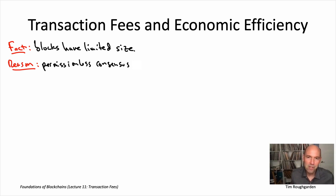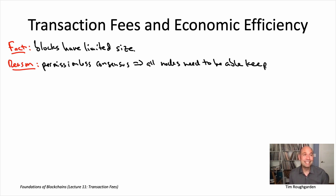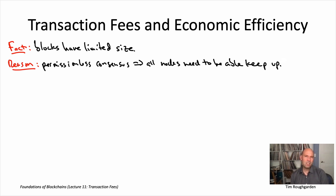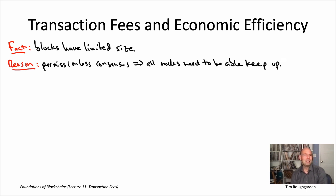If you want barriers to entry to be that low, you can't assume much about the computational power, storage, or internet connection speed of the nodes running your protocol. Given that all nodes execute all transactions, and we'd rather not assume nodes are all that powerful, that obviously places a limit on how many transactions can be processed — because all nodes running the protocol need to keep up. In fact, the situation is even a little bit worse than that. Take Ethereum as an example: blocks every 13 seconds. It's crucial that a typical node can process a block in less than 13 seconds, because another block will be coming along.